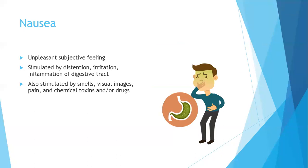Nausea is a symptom — an unpleasant subjective feeling. It's stimulated by distension, irritation, and inflammation of the digestive tract, but it can also be stimulated by smells, visual images, pain, chemical toxins, or drugs. Nausea is one of those systemic symptoms that could indicate a lot of things going on, including psychological triggers — it's not always a physiological cause.